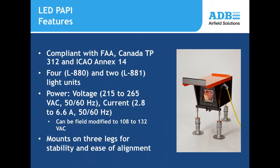The LED PAPI is compliant with FAA, Transport Canada, and ICAO specifications. This covers a four-box PAPI system (L-880 in the FAA market) or an abbreviated two-box system (L-881). For voltage-driven PAPIs, mostly used in the US market, input voltage is 215 to 265 volts at 50 or 60 Hz, modifiable in the field to 108–132 volts AC, or current-driven from a series circuit operating between 2.8 and 6.6 amps.